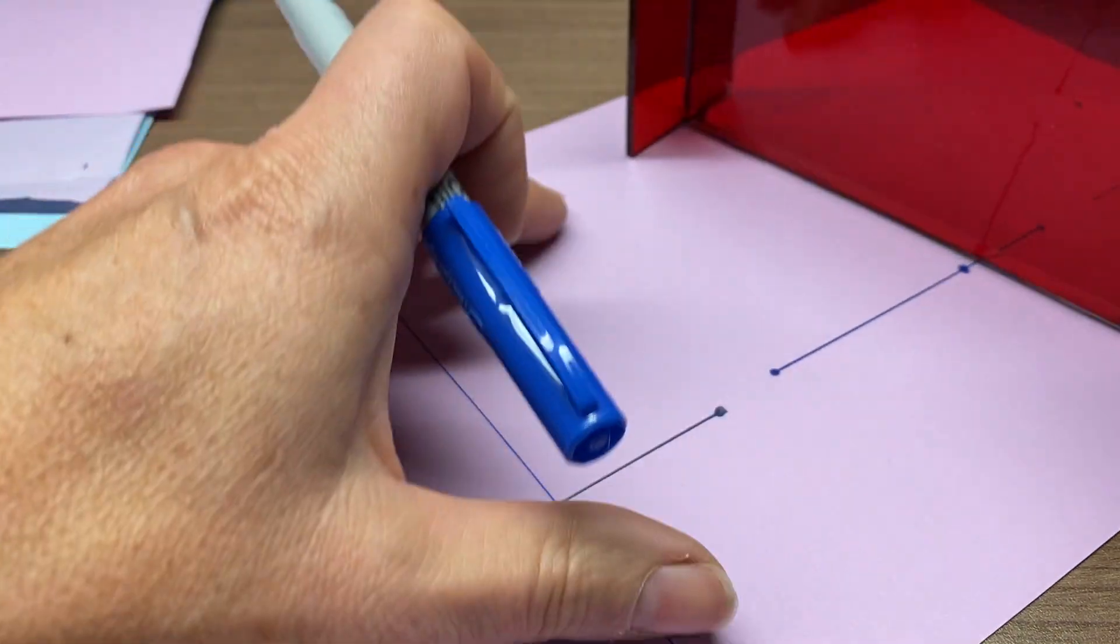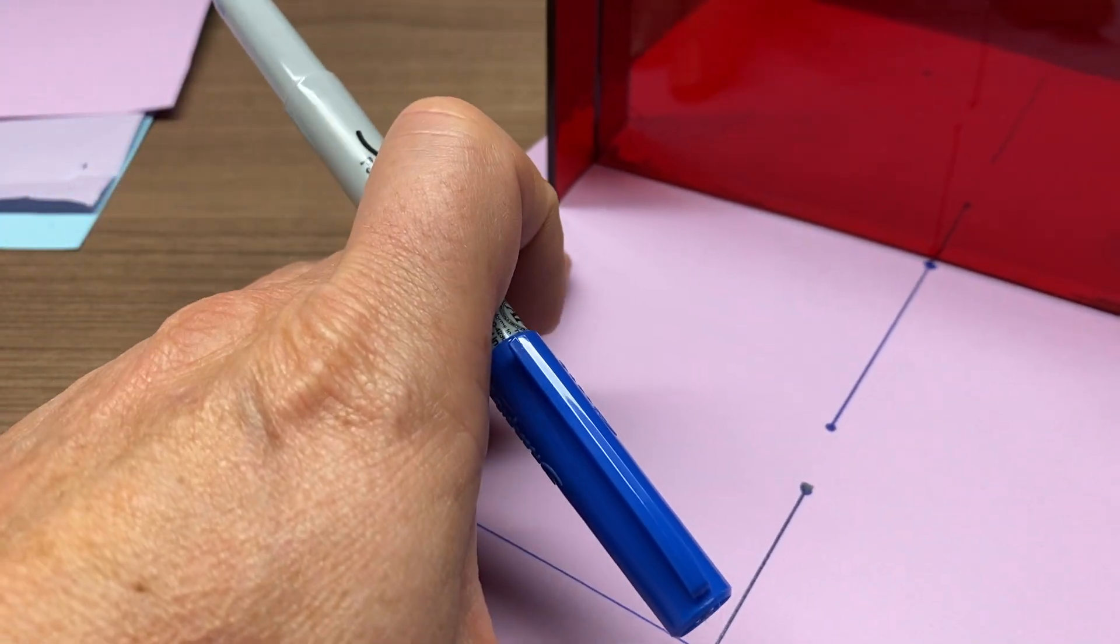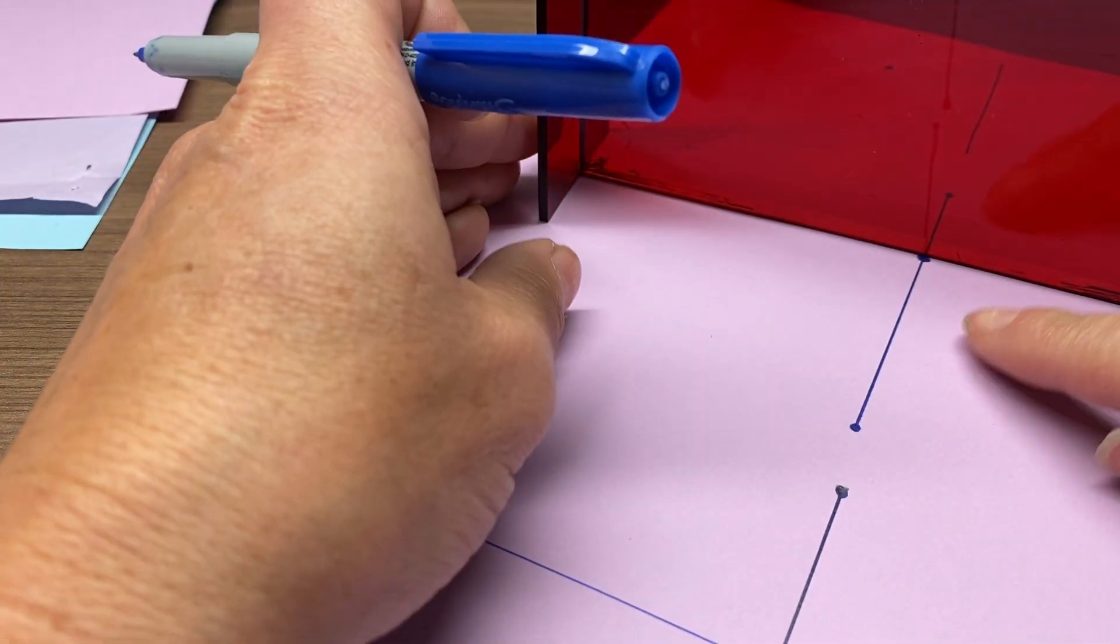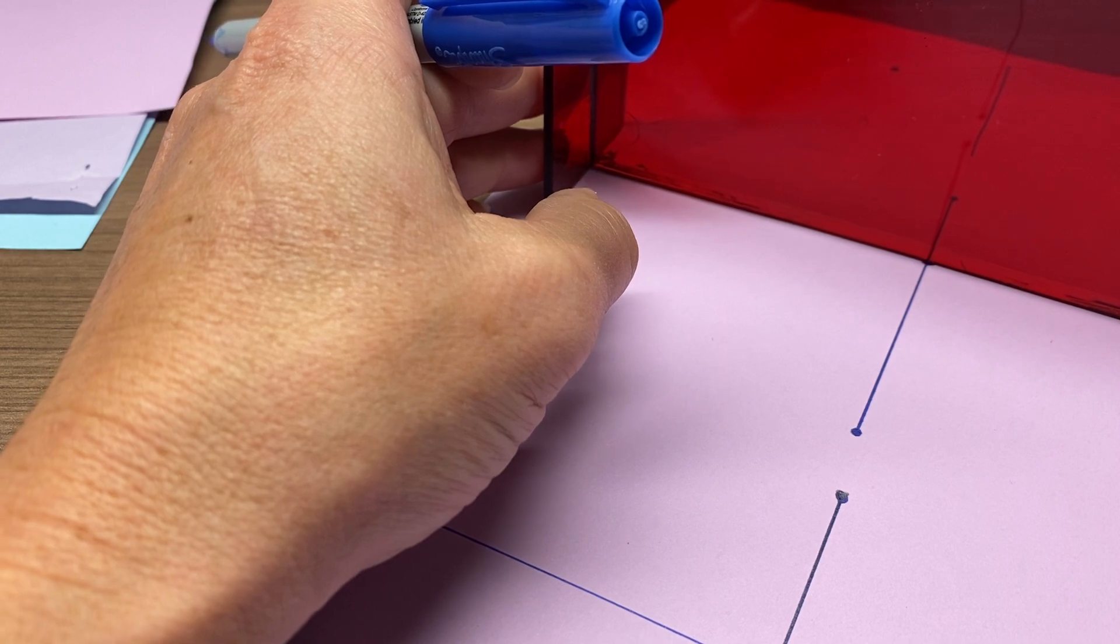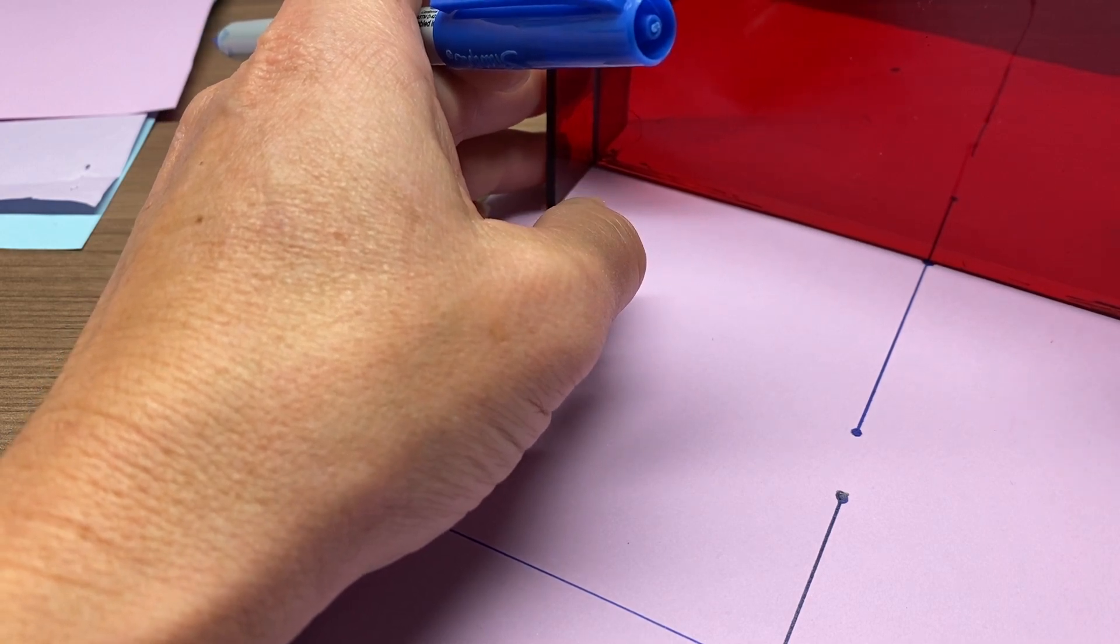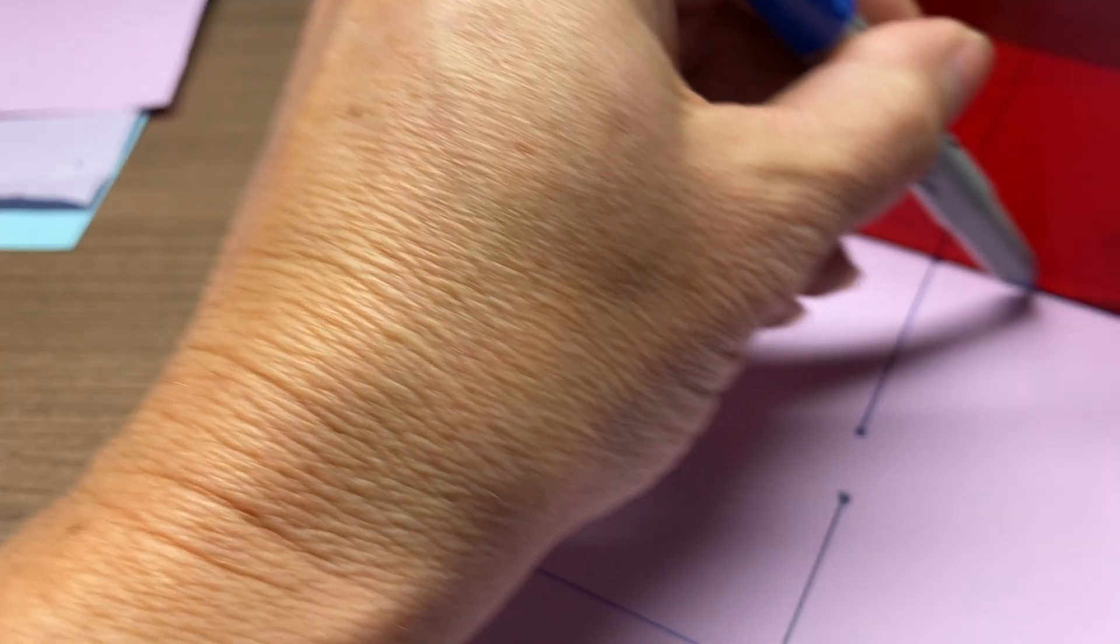Similarly, when we do the perpendicular through a point on the line segment, we want to do the same procedure, except we make sure that our mirror board is on that point when we line it up, and then we draw.